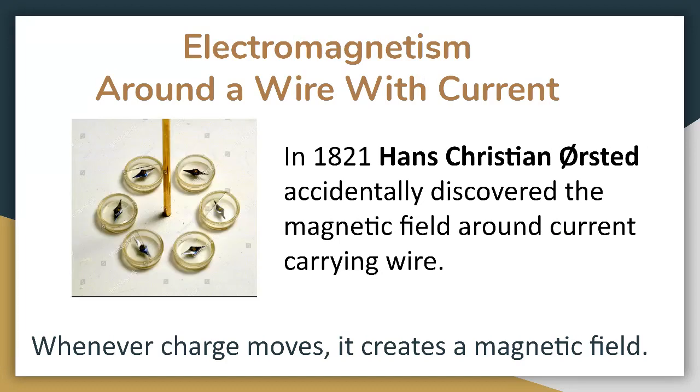In 1821, Hans Christian Ørsted accidentally discovered the magnetic field around a current carrying wire. He found that when he placed a compass near a current carrying wire, the needle of the compass, which is a tiny magnet, was deflected. When he put several compasses around the wire, he noticed that the shape of the magnetic field was circular.